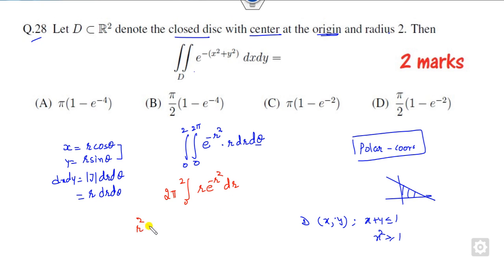You can take r square as phi, then 2r dr is d phi. So multiply and divide by 2. This becomes pi times the integral from 0 to phi of e to the phi d phi. This is phi square by 2. When you substitute phi, the limits are 0 to 4.